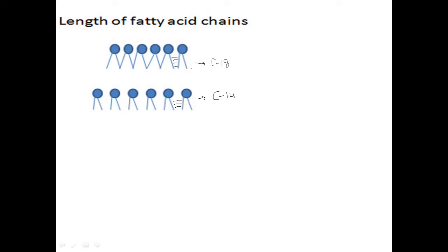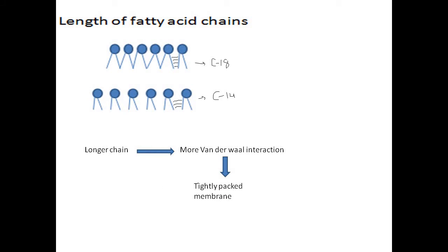The more bonds that form between lipids, the closer and more tightly packed they are. The fewer bonds formed, the less organized and more fluid the membrane becomes. So longer chains produce more van der Waals interactions because they provide greater surface area — a chain of 18 carbons is definitely larger than one of 14 carbons. As a result, the membrane is more tightly packed and fluidity is less, since tightly packaged membranes are more rigid in nature.